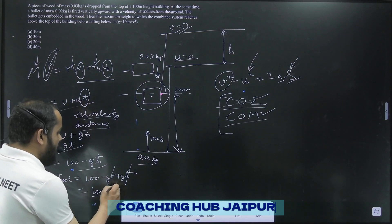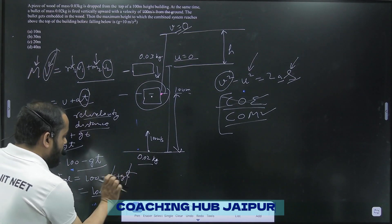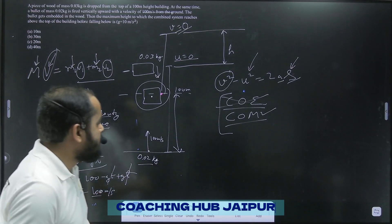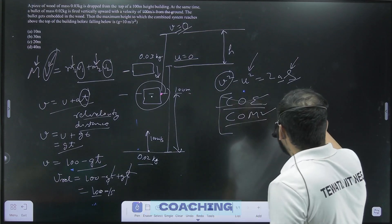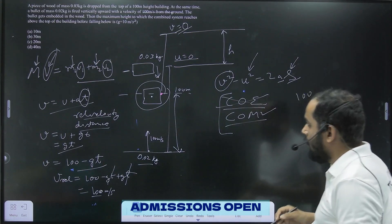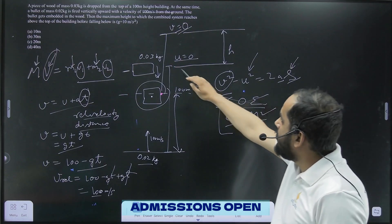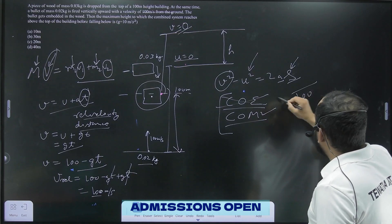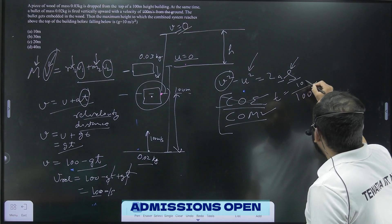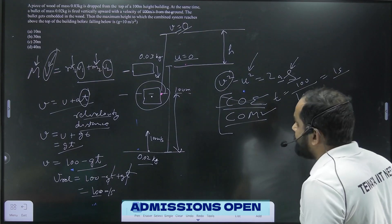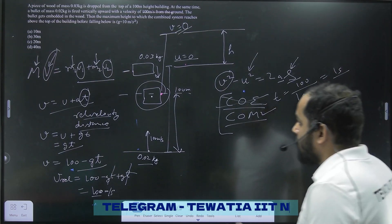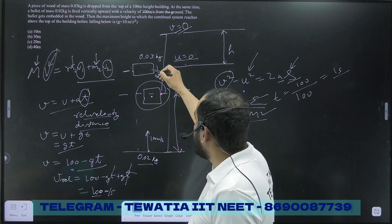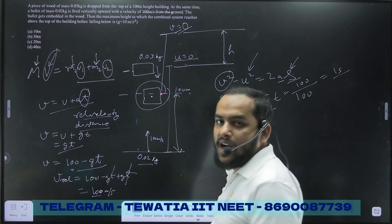This makes calculation very easy going forward. Since the relative velocity is 100 m/s and the initial distance between them is 100 meters, we can simply calculate: t = 100 ÷ 100 = 1 second. So we've found that the two masses will collide and become a combined mass after 1 second.